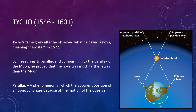In 1563, Tycho decided to observe a widely anticipated alignment of Jupiter and Saturn. To his surprise, the alignment occurred nearly two days later than the date Copernicus had predicted. Resolving to improve the state of astronomical predictions, he set about compiling careful observations of stellar and planetary positions. Tycho's fame grew after he observed what he called a nova — meaning new star — in 1572. By measuring its parallax and comparing it to the parallax of the moon, he proved that the nova was much farther away than the moon. Today we know that he saw a supernova, the explosion of a distant star.